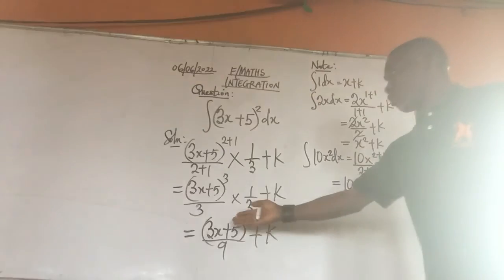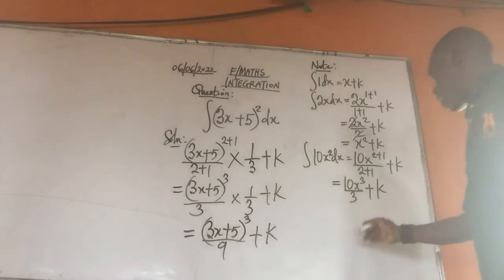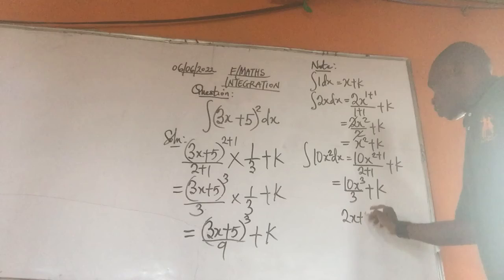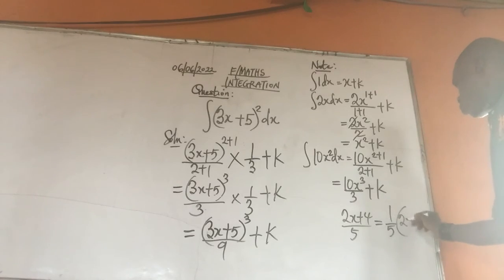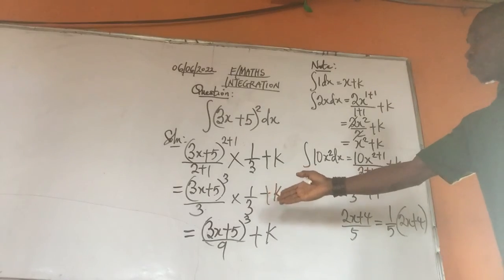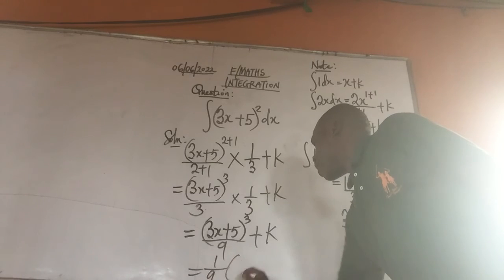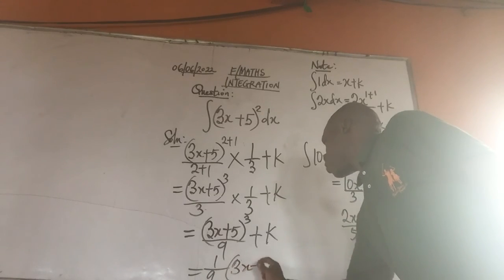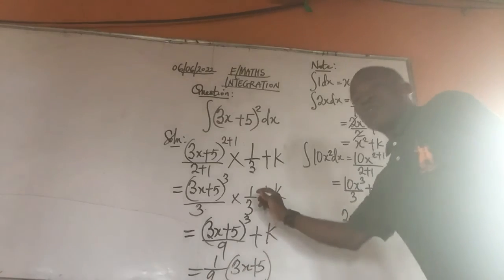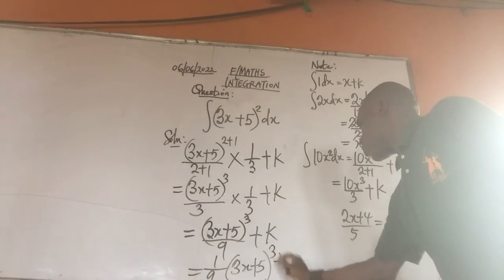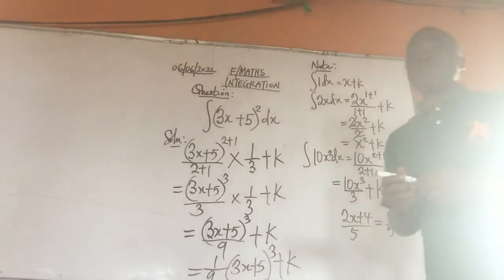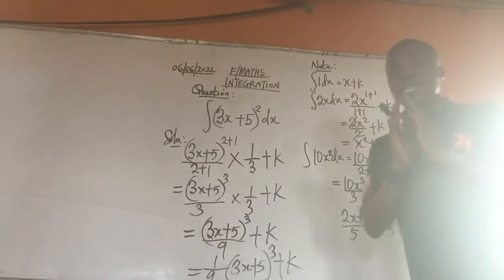Then in mathematics, what we have is something like this. Let's have 2x plus 4 over 5. This is the same thing as 1 over 5 in brackets 2x plus 4. So, I am going to apply this pattern on something like this. That means from here, my final result will now be 1 over 9 in brackets 3x plus 5 raised to the power of 3, then plus k. That is all. That is the result for this. That is the final result for this.